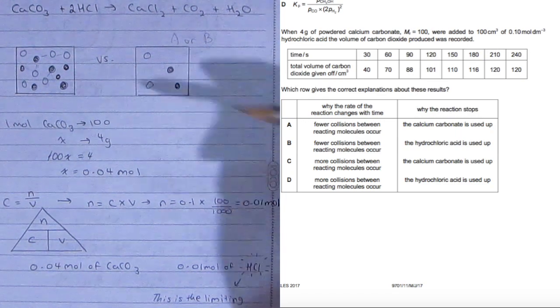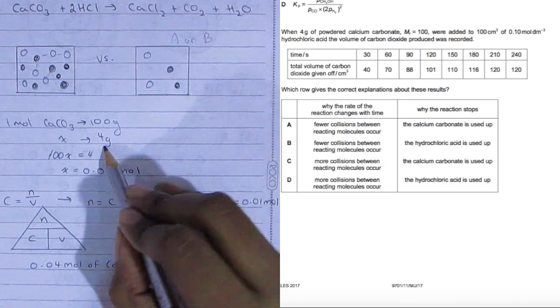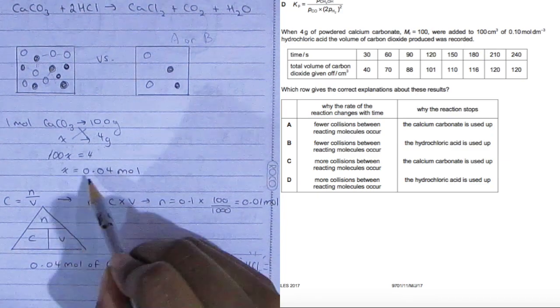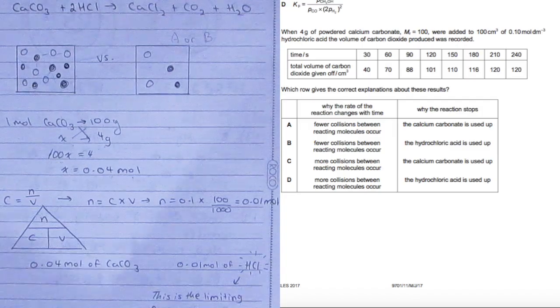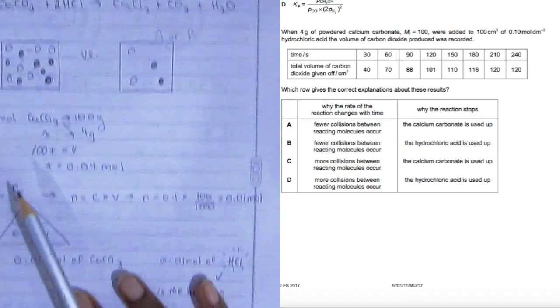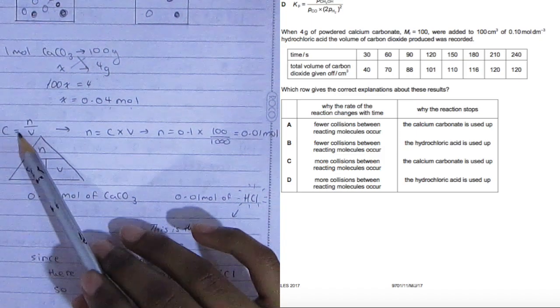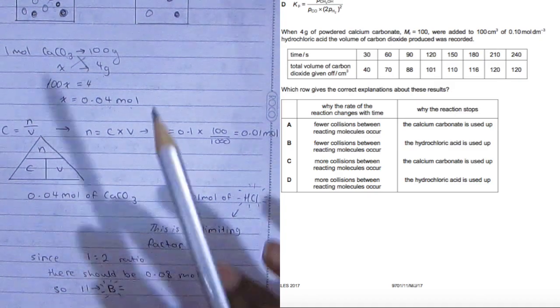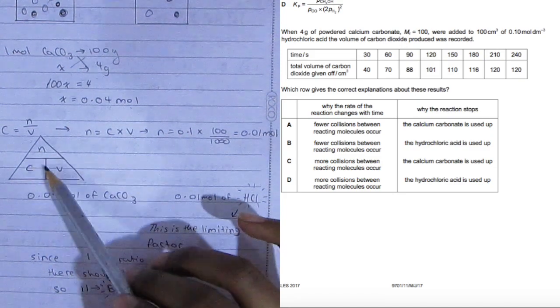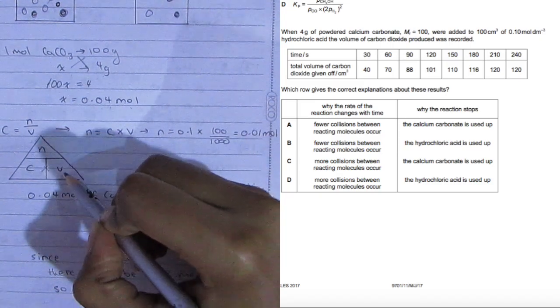We're going to calculate here. One mole of calcium carbonate is 100 grams, and how many moles gives you 4 grams? Cross multiply, and x equals 0.04 moles of calcium carbonate, which is stated in the question. Now we need to find the number of moles of hydrochloric acid. Use the formula c equals n over v, so concentration equals number of moles over volume. N equals c times v.